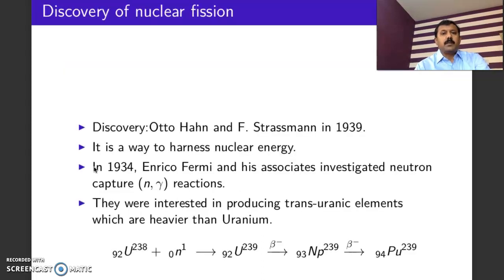Nuclear fission is a process in which a heavy compound nucleus splits up into nuclei of comparable masses. So if you bombard a heavy nucleus with a thermal neutron, you will see that this nucleus splits up to produce two or more lighter elements of comparable masses.